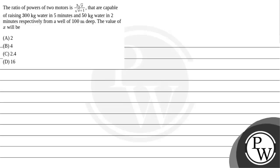Hello. Let's read the given question. The question states that the ratio of powers of two motors is 3√x divided by √x + 1, that are capable of raising 300 kg water in 5 minutes and 50 kg water in 2 minutes respectively from a well of 100 meters deep. The value of x will be, and the options are given below.